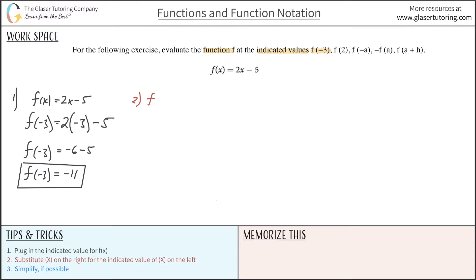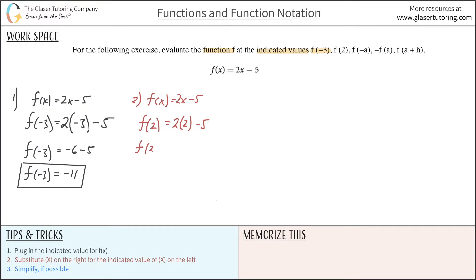Let's look at the second one. We start with the original function f of x is equal to 2x minus 5. The indicated value now is f of 2, so we plug in f of 2 for f of x. Then on the right-hand side, substitute x for the indicated value 2. So 2 times 2, then minus 5. This gives us 4 minus 5, which is negative 1.